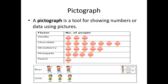This pictograph shows the number of boys and girls in a class, and includes a scale. One picture of a boy stands for 5 boys. There are 3 boy pictures, so 5 plus 5 plus 5 equals 15 boys. Same for girls — one picture stands for 5 girls, and there are 3 pictures, so 15 girls. Total students: 15 plus 15 equals 30.